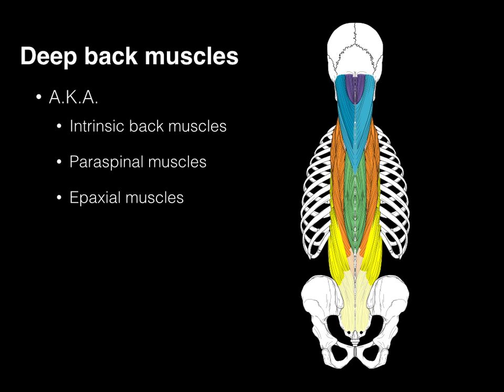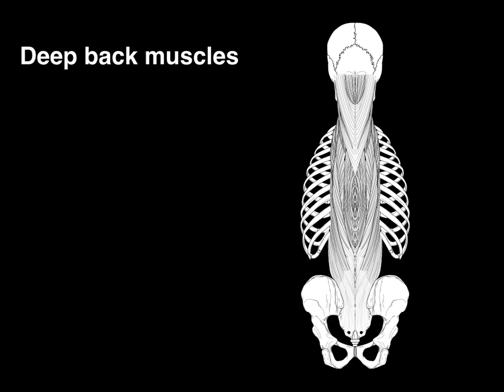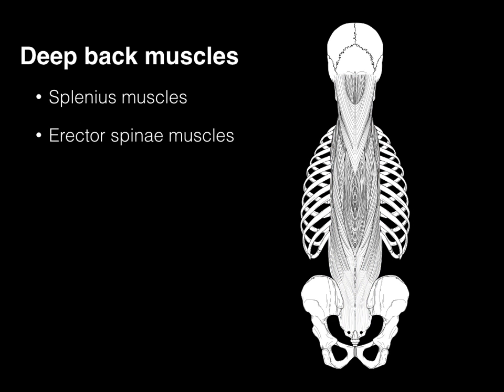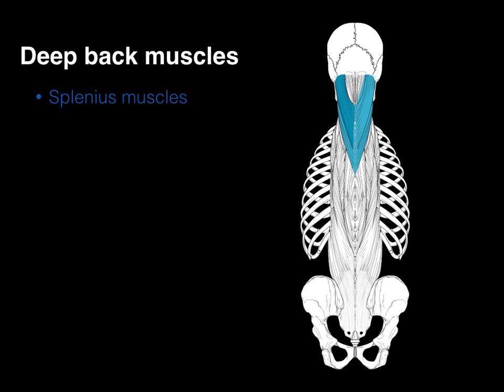We're going to be covering the splenius muscles as a group, erector spinae muscles as a group, transversospinalis muscles as a group, and a wee bit about suboccipitals. Let's start with the splenius muscles. Splenius means bandage-like — it looks like a bandage going around the head. Though it doesn't attach to the front of the head, the back part looks like a bandage.